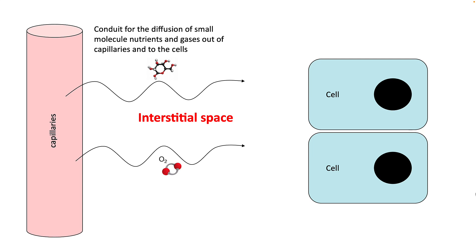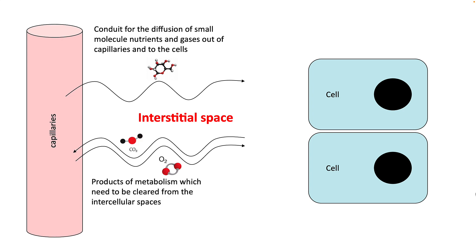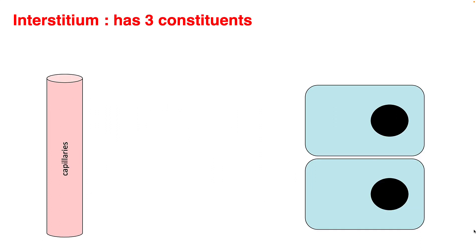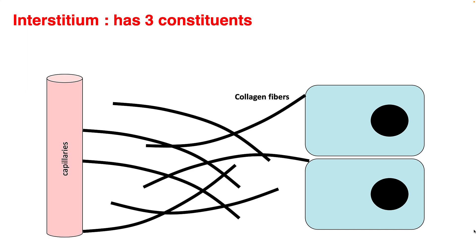Interstitial space has other functions such as being a conduit for diffusion of gases, nutrients, and products of metabolism. Cell signaling and immune system encounters with pathogens mostly occur in interstitium. Interstitium in fact has three constituents: it consists of collagen fibrils, spindle cells, and fibroblasts.